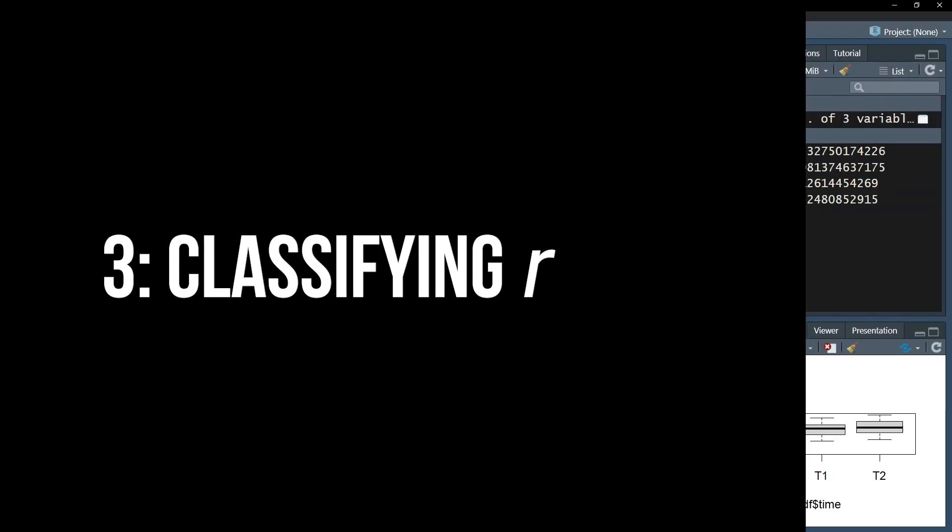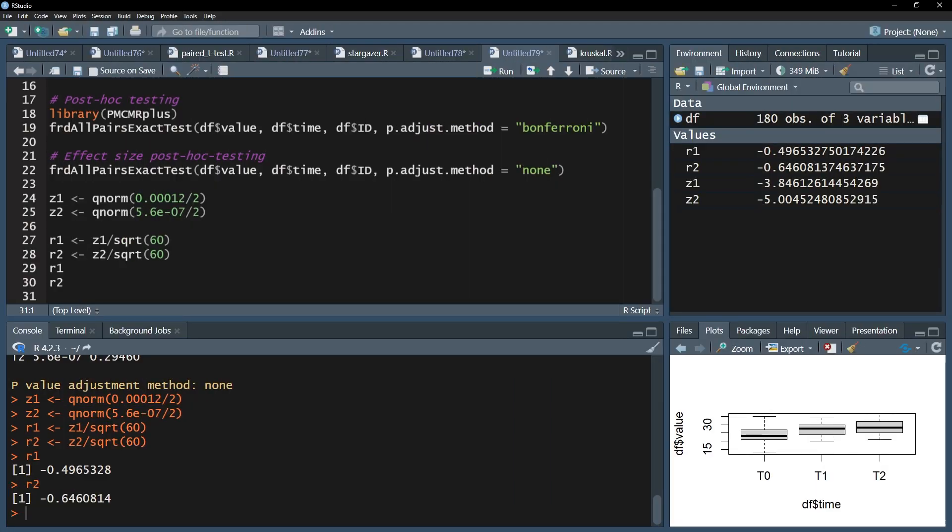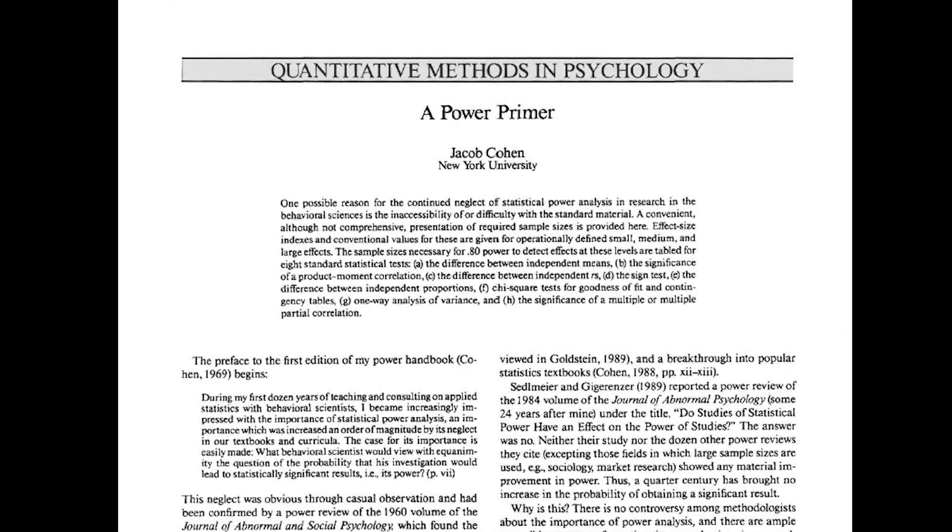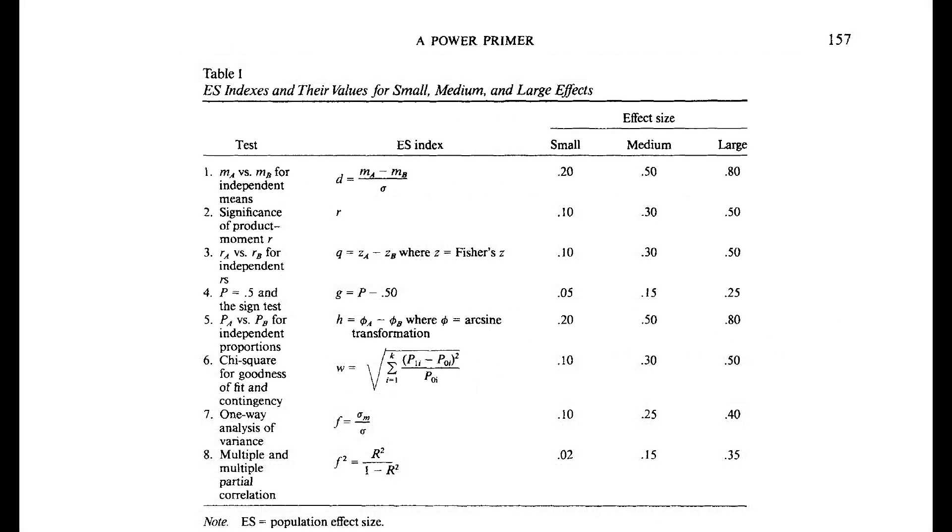Finally, you have to classify the magnitude of those effects for which you consider the p-value being small enough. You can refer to Cohen 1992 A Power Primer. Page 157 shows three thresholds for the effect size r. If it exceeds 0.1, it is a small effect. If it exceeds 0.3, it is a medium effect. And if it exceeds 0.5, it can be classified as a large effect.